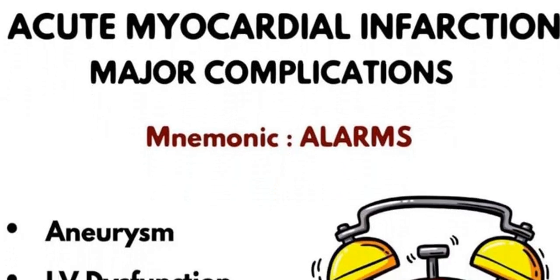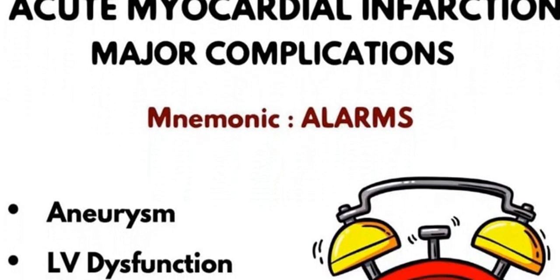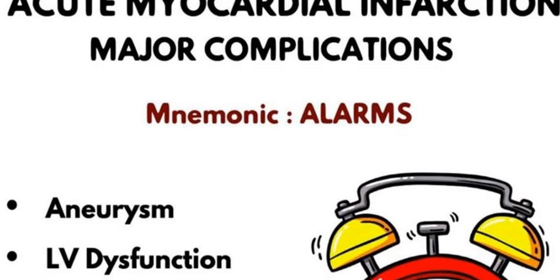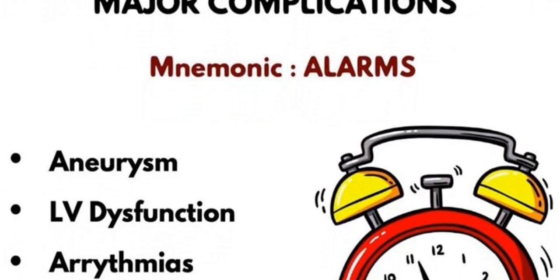The next letter, L, stands for LV dysfunction, or left ventricular dysfunction, which can also occur as a result of MI. The next letter, A, stands for Arrhythmias, specifically ventricular arrhythmias, which can also occur due to myocardial infarction.